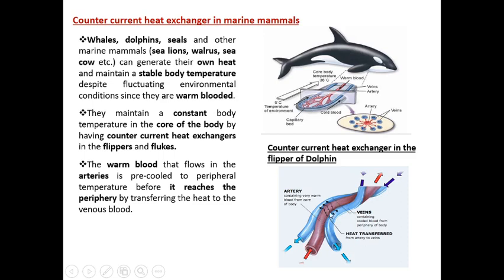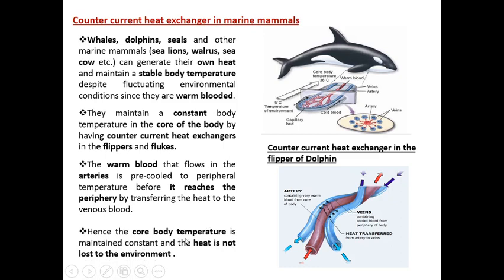Arteries carry slightly warm oxygenated blood coming from the heart side — this blood is hot. Veins carry deoxygenated blood from all parts of the body, which is mostly cold. That cool blood needs to be somewhat pre-heated, or the warm blood needs to be pre-cooled. The ultimate balance of heat takes place through arteries and veins by the counter current mechanism. This is how the core body temperature is maintained constant and heat is not lost to the environment — balancing occurs by counter current heat exchange.